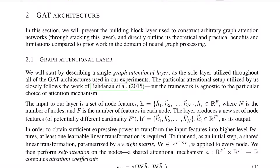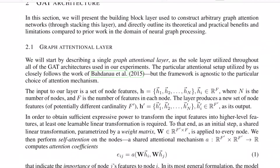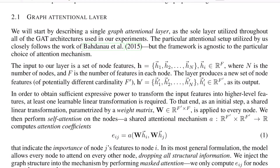Let's start by understanding the equations and notations. We define an initial hidden representation for every node with dimension F. After passing through one hidden layer, the new representation has dimension F', where F' can be greater or less than F depending on whether you have a narrower or wider network.